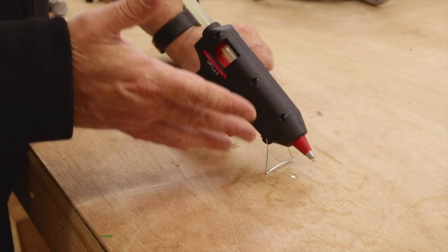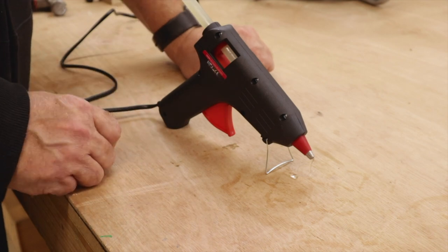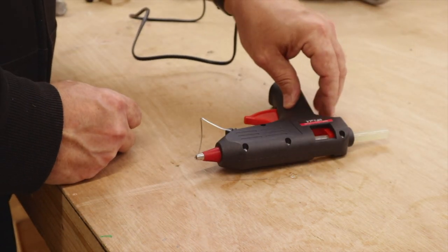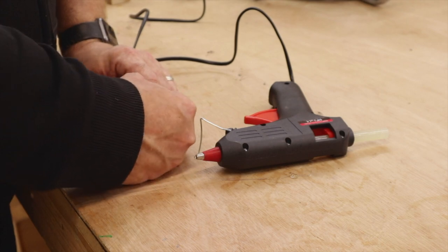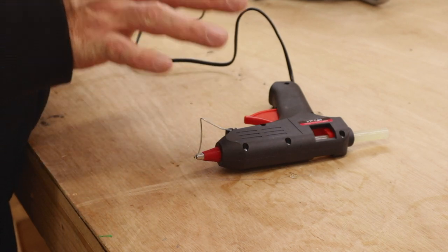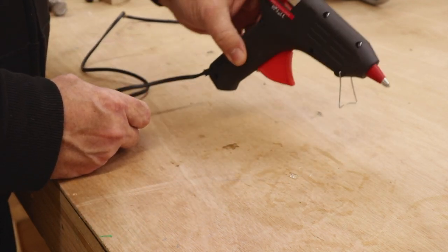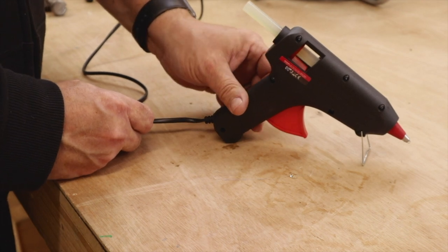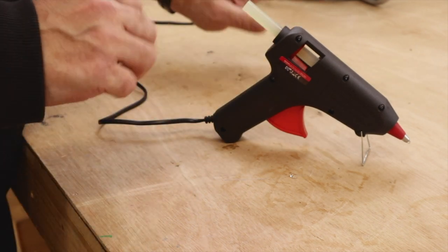Also, when people burn themselves on glue guns, it's because they're normally reaching over them or they've left them on their side and they accidentally touch the back of their hands on them. So take special care. Whenever you put it down, you put it away from you at arm's length, and that way you'll avoid getting any glue gun burns at all.